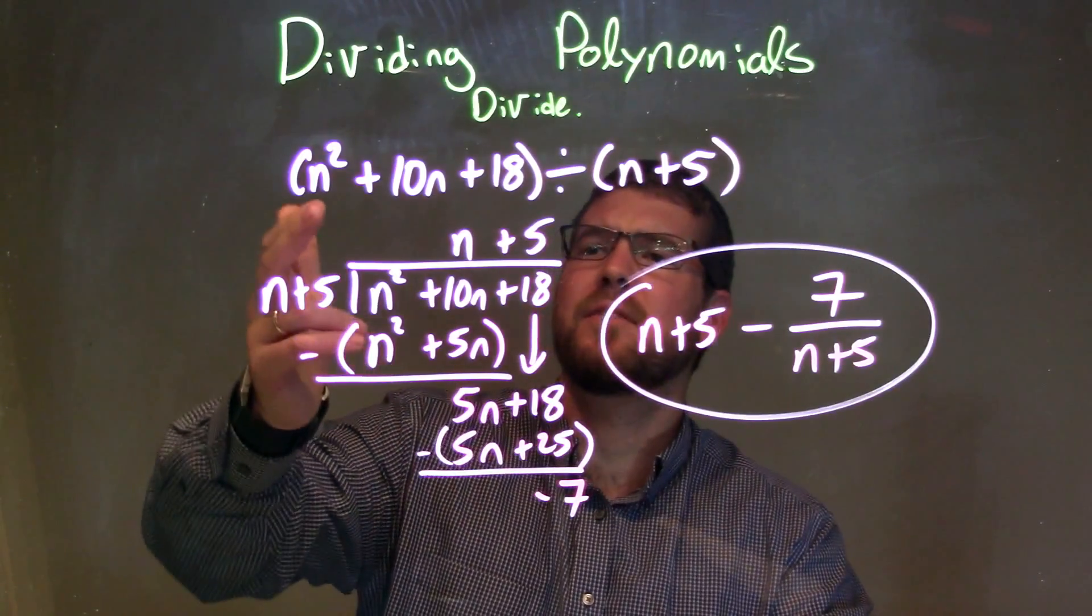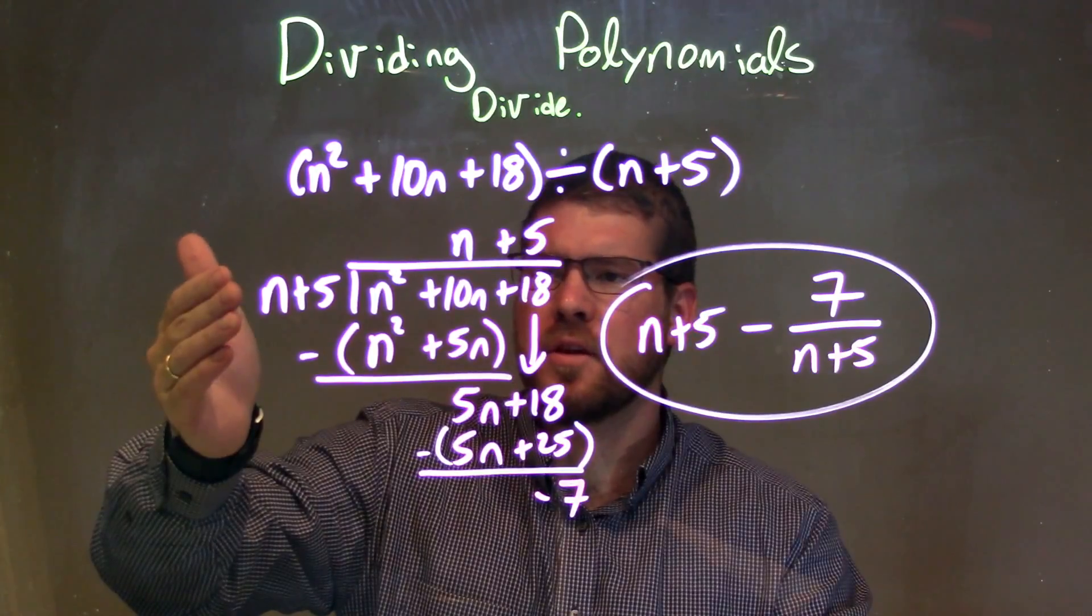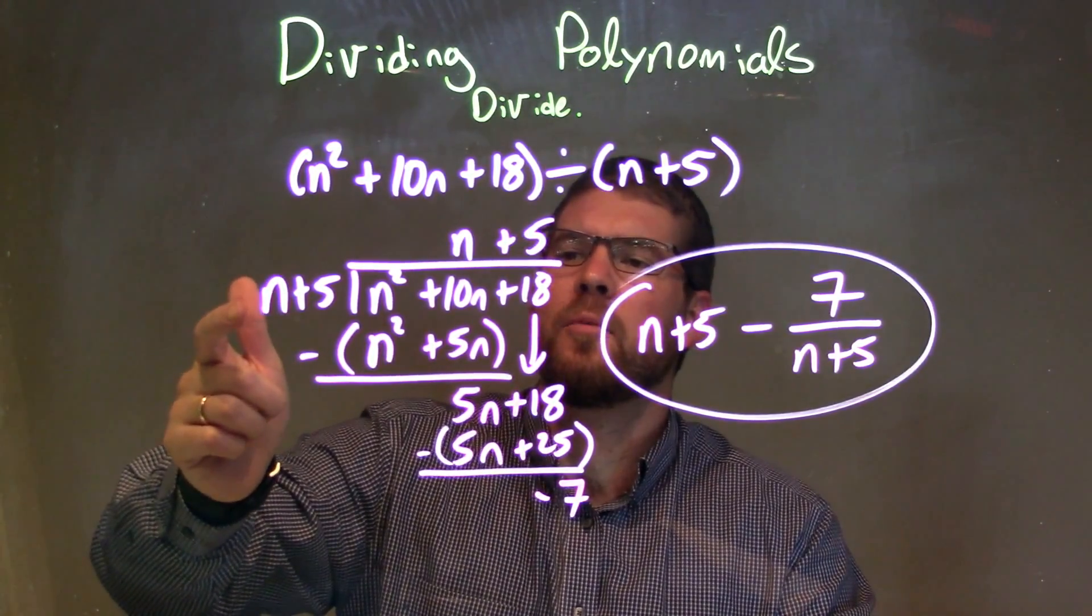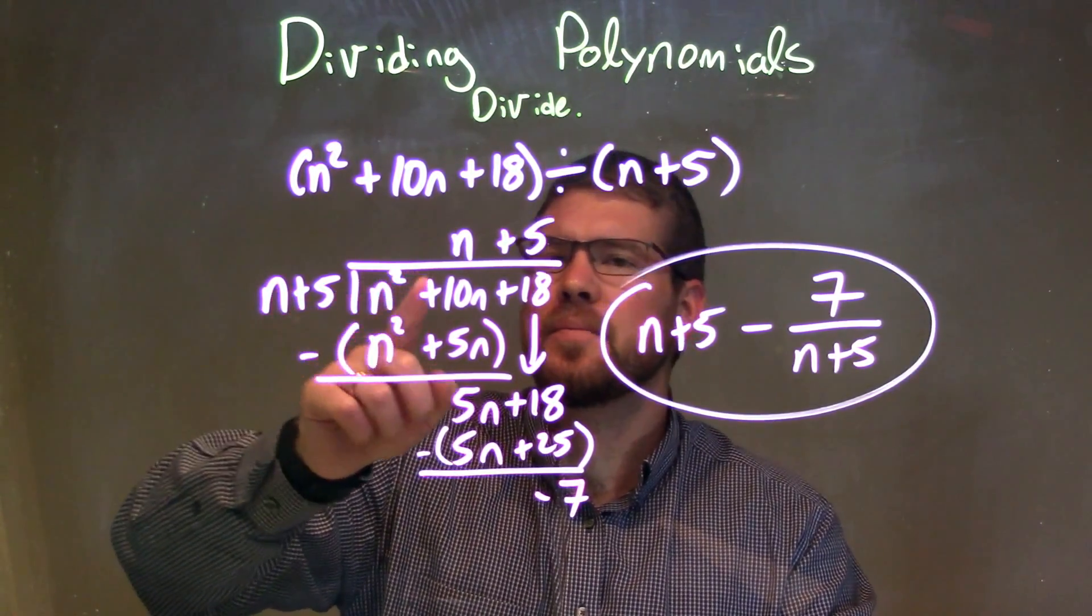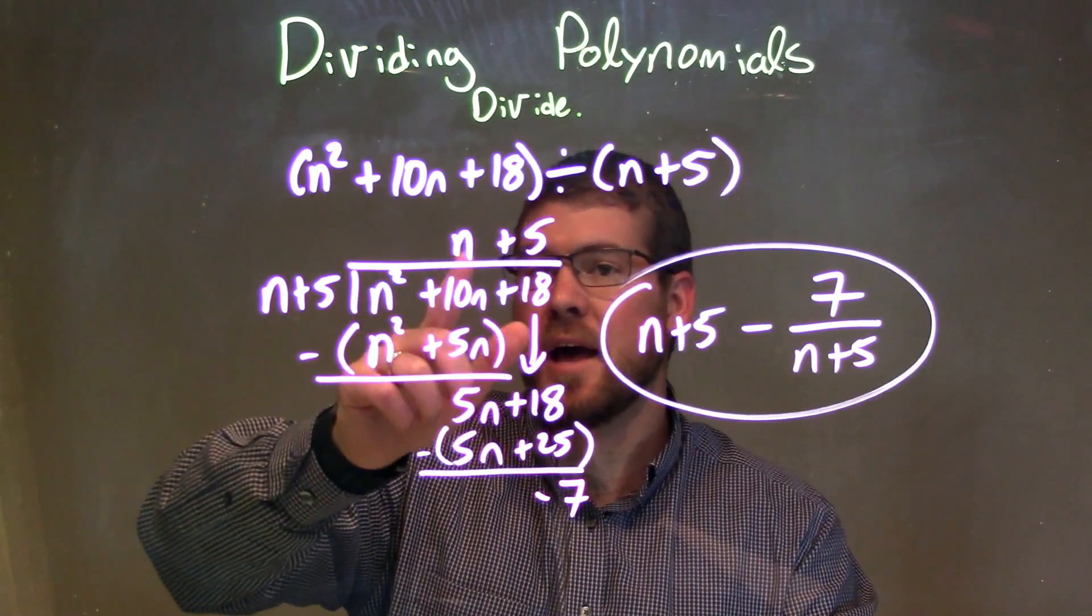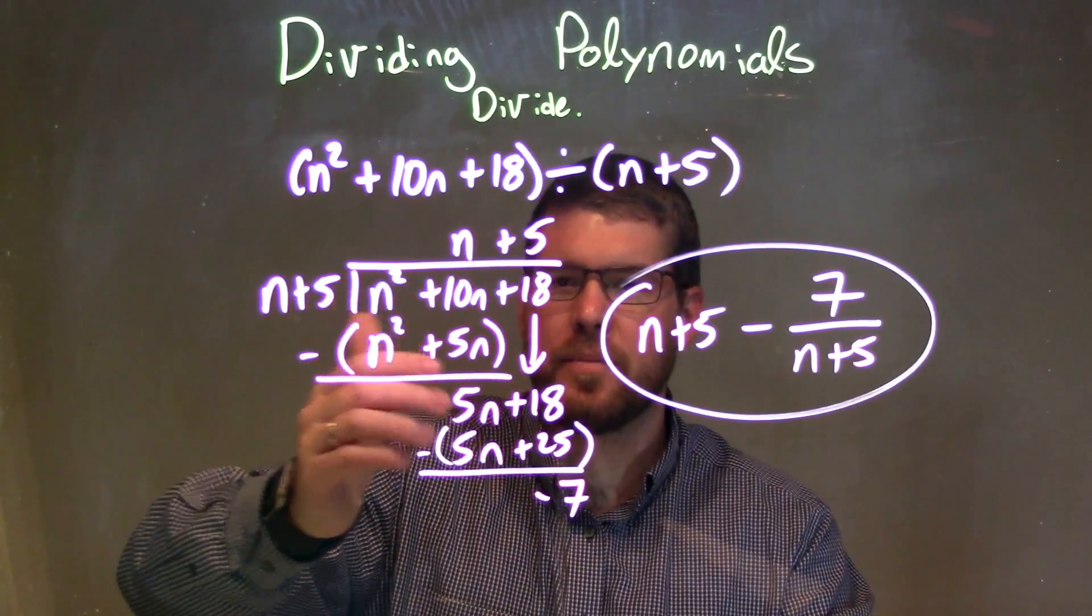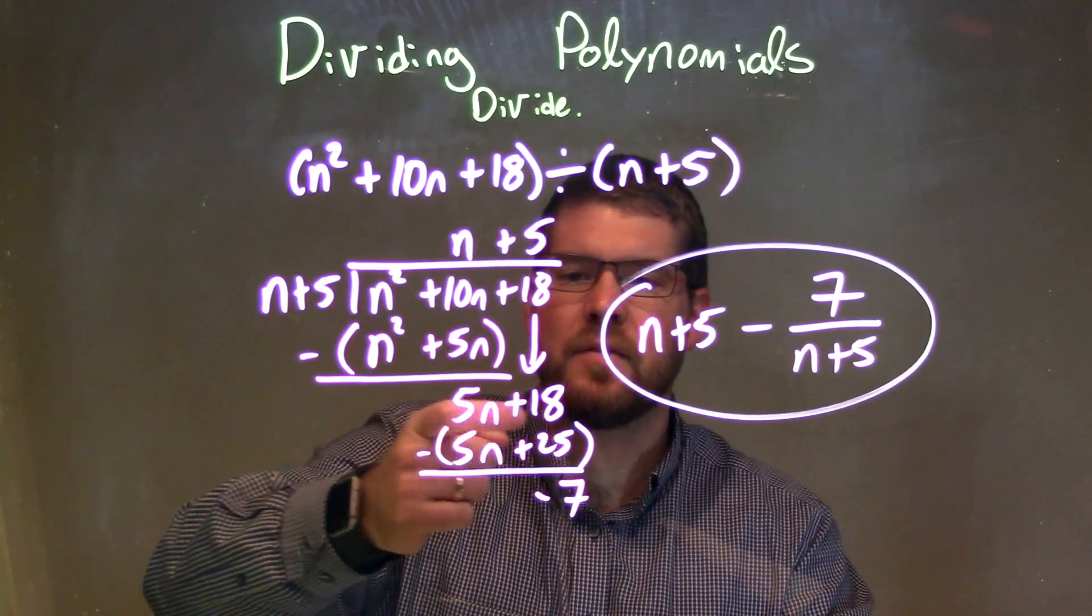So as a recap, we're given n squared plus 10n plus 18 divided by n plus 5. I wrote it out using long division here. Then I have my divisor, my dividend. And we said, what times n gives me n squared, which is n. So n times n is n squared. And multiply n times 5 here. Subtracted them. Brought it down to 18. Left with 5n plus 18 here.